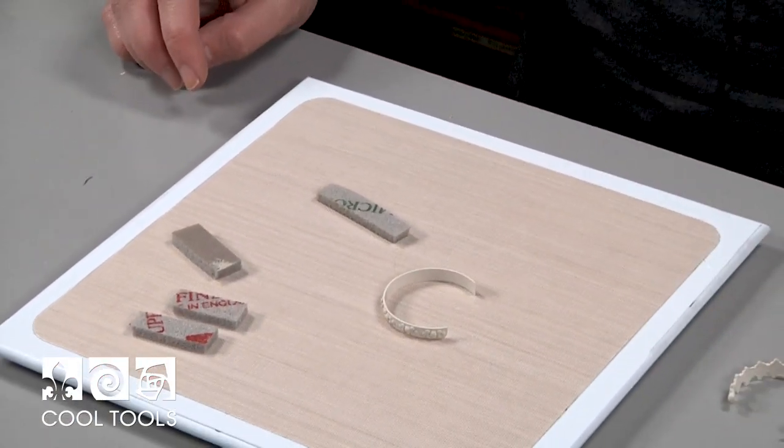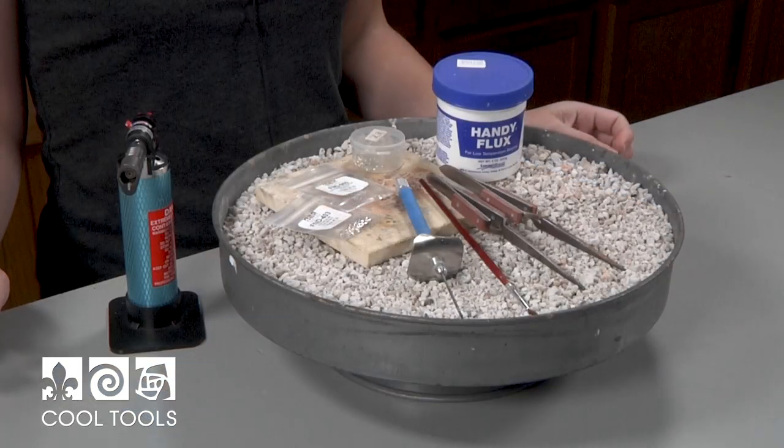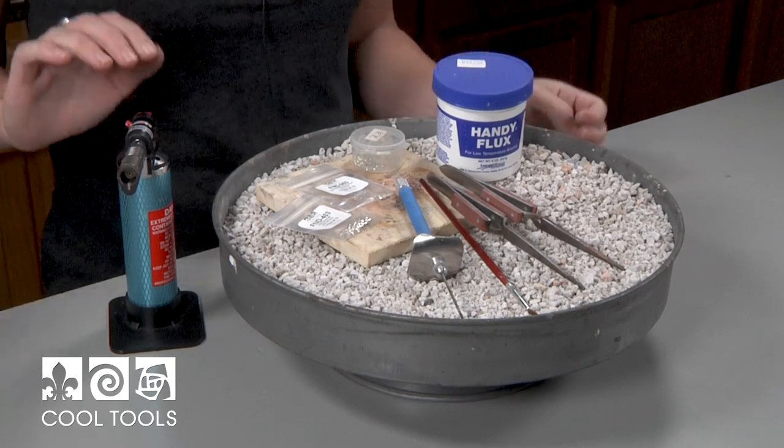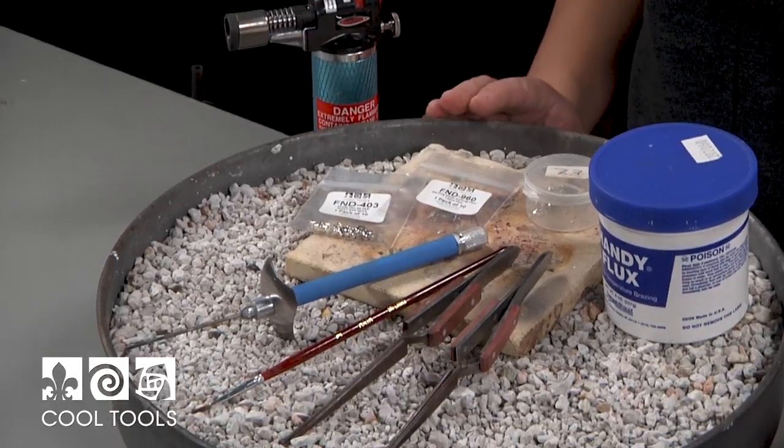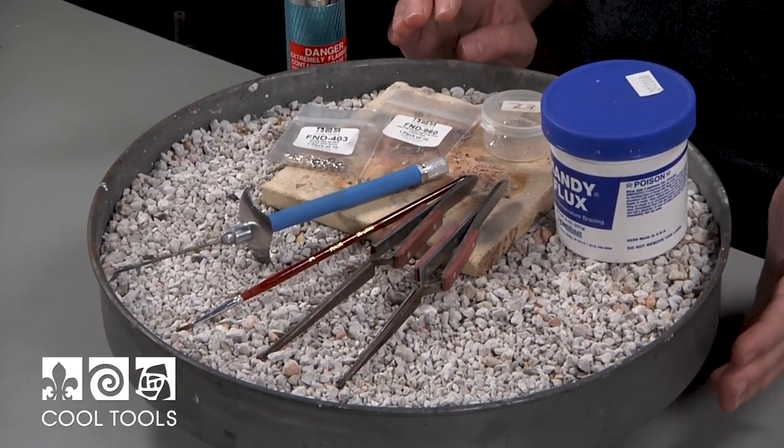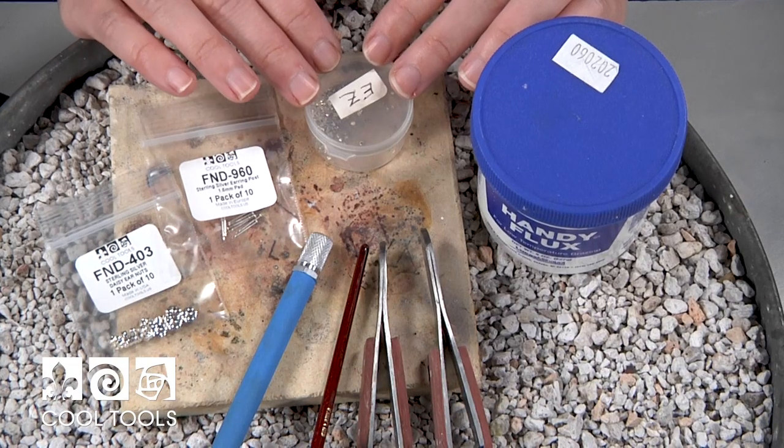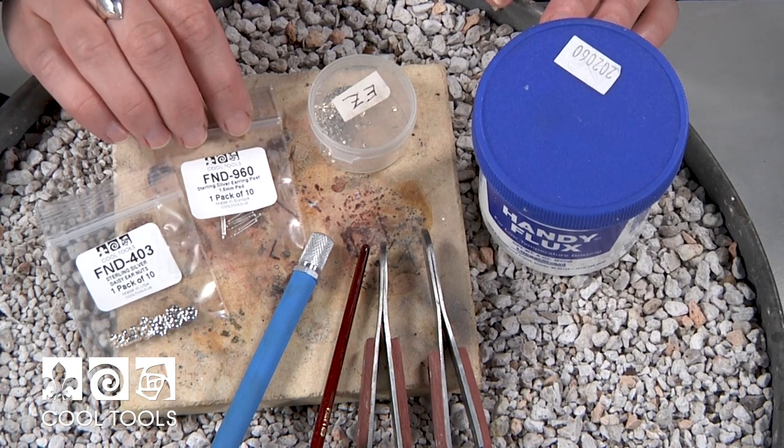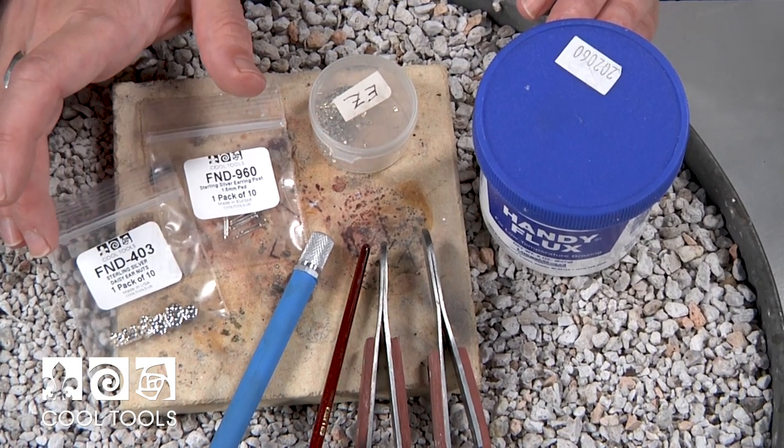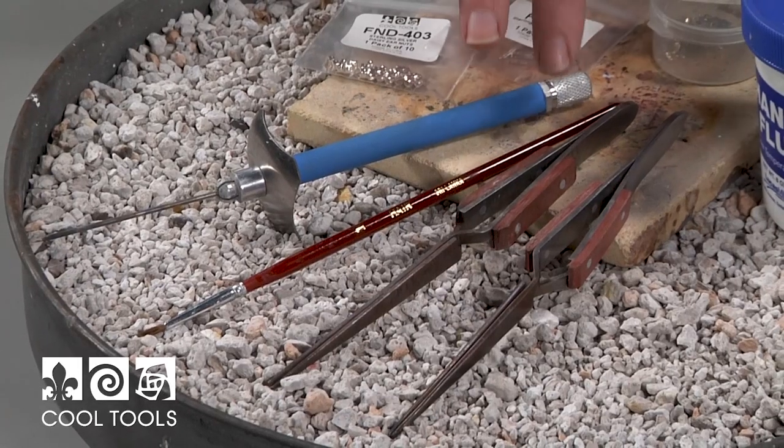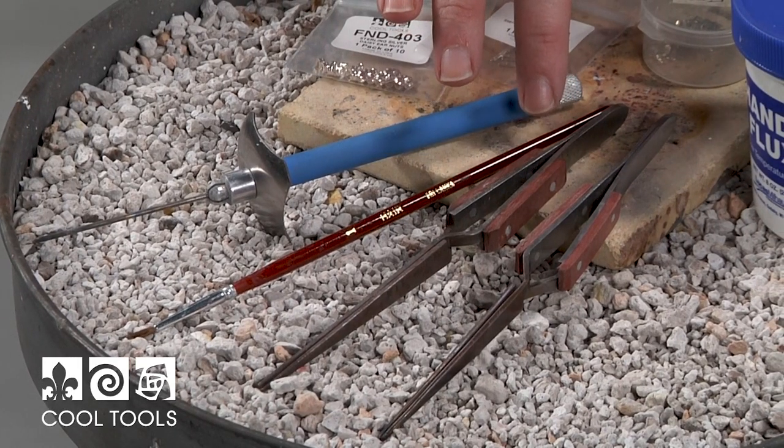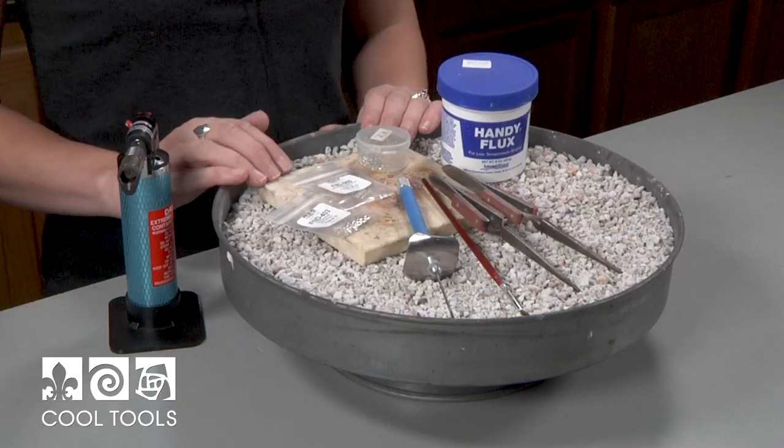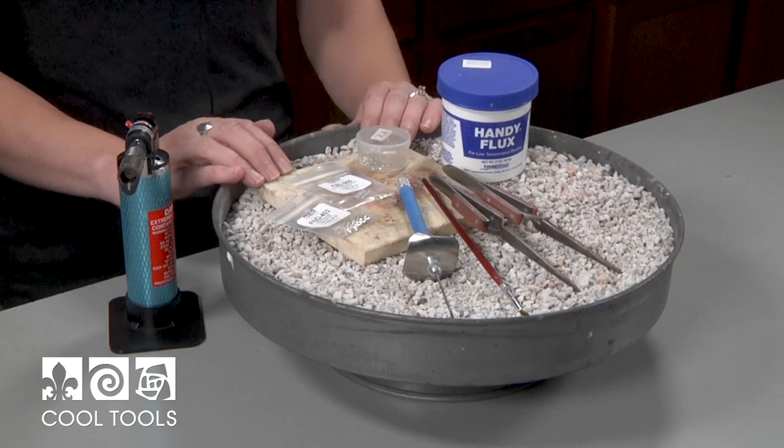So once your piece is sanded, if it is round, you're going to fire an alumina hydrate in a dish. We're going to be soldering the posts onto our hoops, and here's what you're going to need to do that. I have a torch and a kneeling pan, some flux, easy solder since I'm just doing one seam, sterling silver earring posts, and daisy ear nuts. I'm going to be using a solder pick, a brush for flux, and two self-closing tweezers. I also have a brick here. So let's solder those posts on.